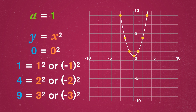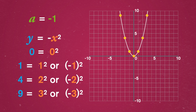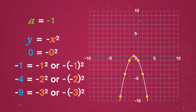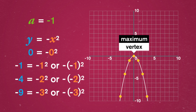What if the a term were negative, like y equals negative x squared? Our y values are going to be the opposite of what they were before, so the arms stretch down instead of up. Negative zero squared is still zero, so in this graph the vertex is still at zero. But now it's the high point – the maximum – rather than the low point, the minimum.